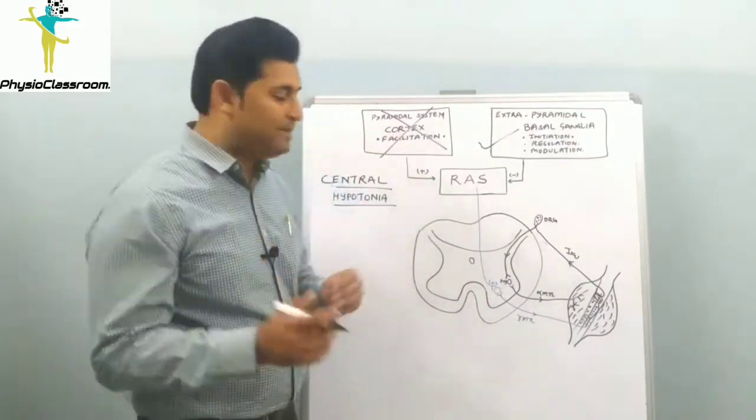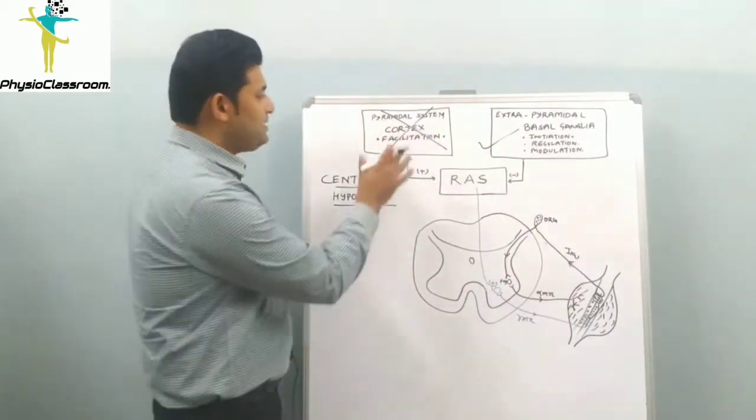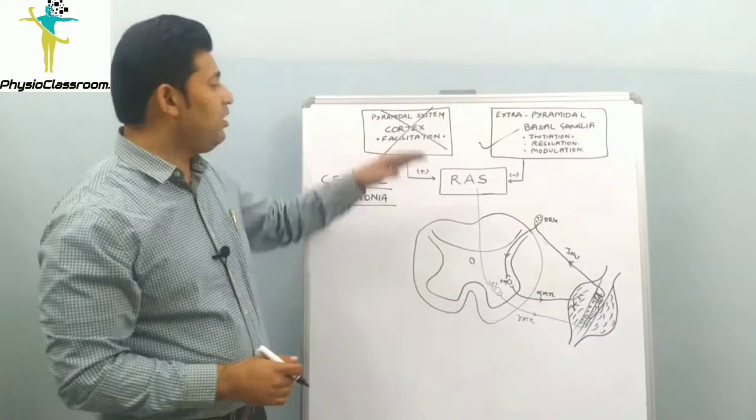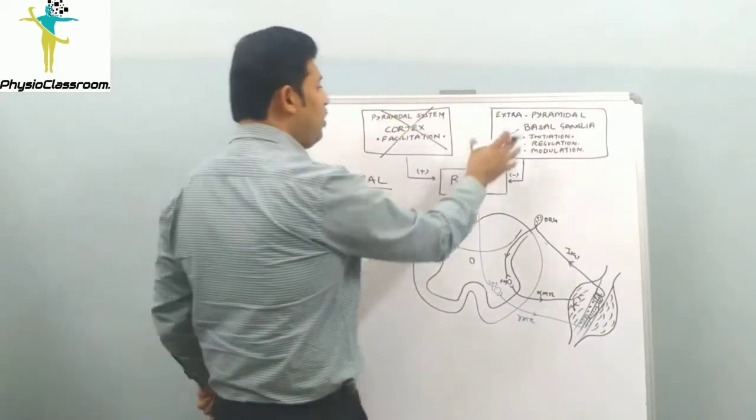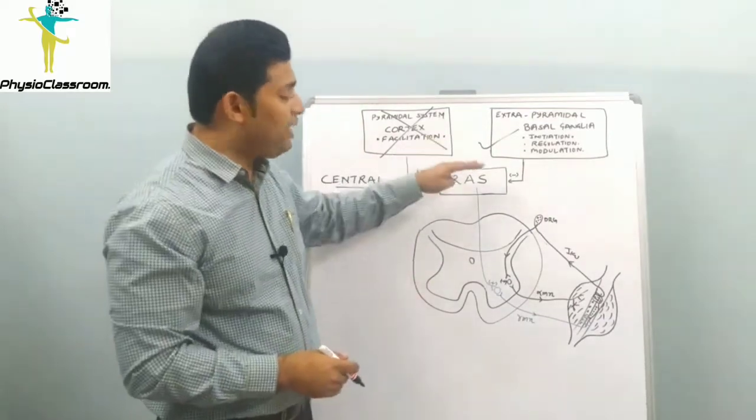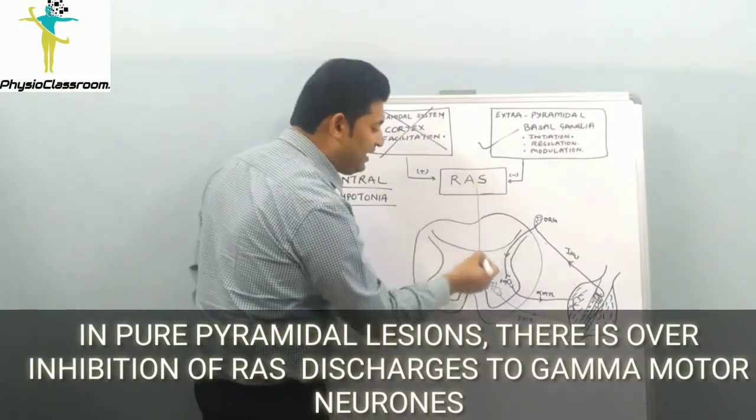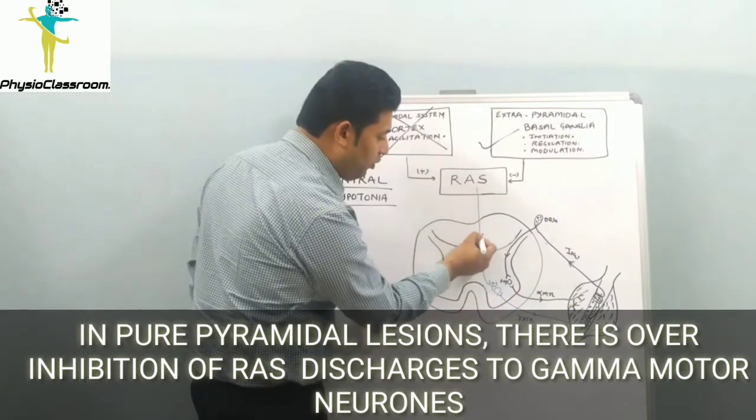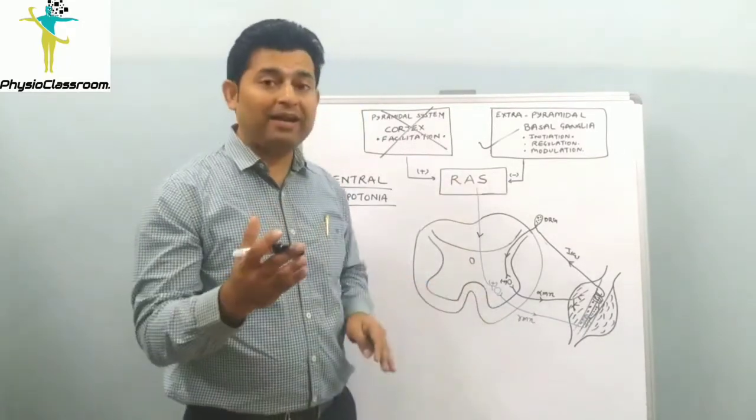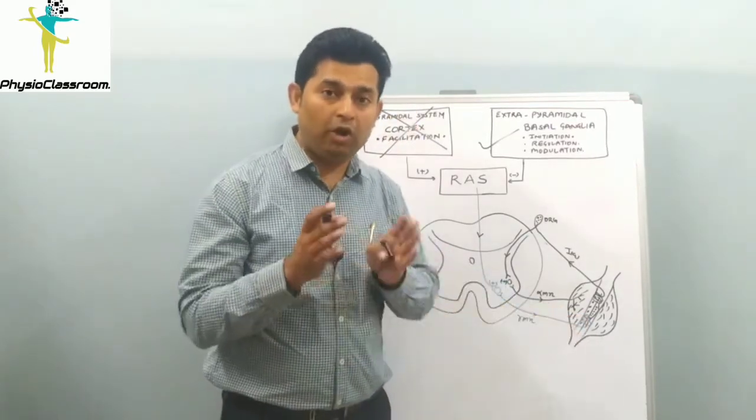Let's see what happens to the muscle stretch reflex in a patient with pure pyramidal lesion. The excitatory discharges to the reticular activating system will be completely lost from the cortex, and the inhibitory discharges will make the RAS dormant. Because of this, there will be no or very little excitatory discharges going from the RAS to the gamma motor neuron, and gamma motor neuron activation to the muscle spindle will be lost.